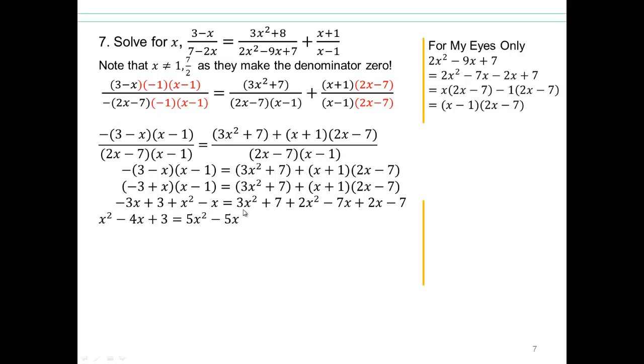Combine like terms here. Can you see how we got that? Here we have x squared. Negative 3x minus x gave me negative 4x. And here we have plus 3. Here we have 3x squared plus 2x squared giving you 5x squared. Plus 7 and minus 7 give you 0. Negative 7x plus 2x gives you negative 5x. All right.